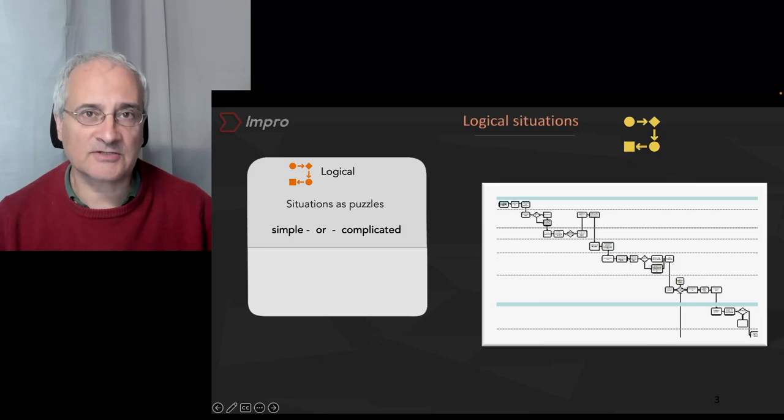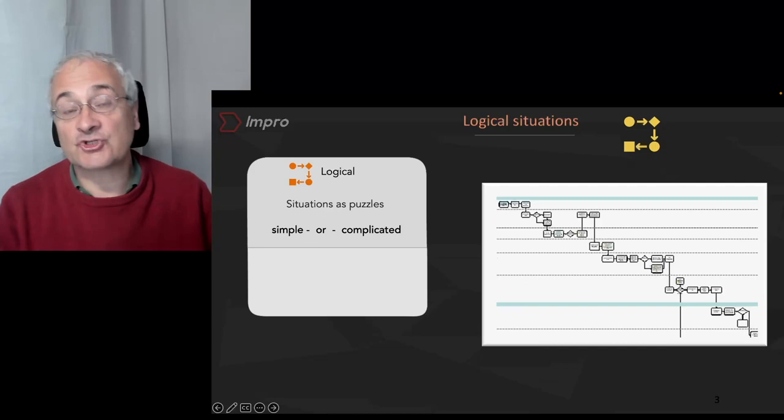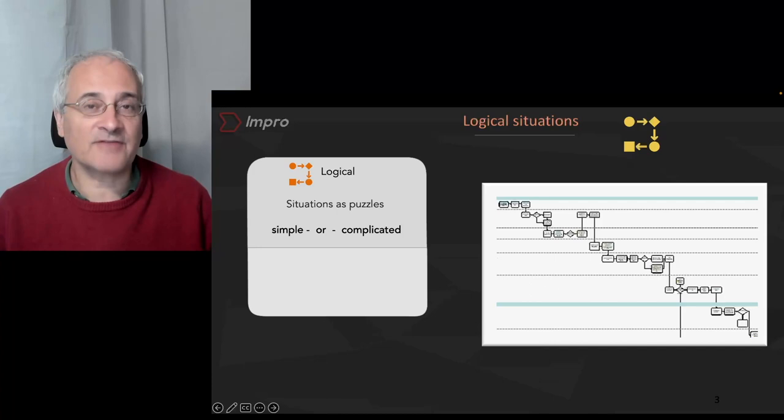If we look at a public sector service, a transactional one like renewing passports, we find that the way those services are designed are in a logical way. They follow a standard framework. Standard decisions are made in that process. And although there's variation, that variation is standardized. That's a good example of a logical service and it's highly transactional.